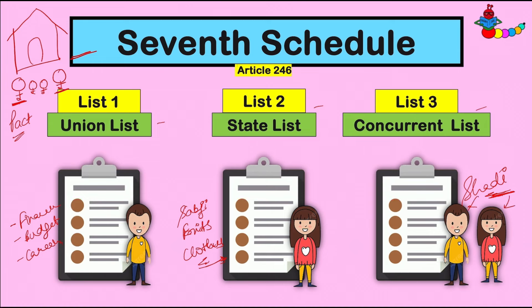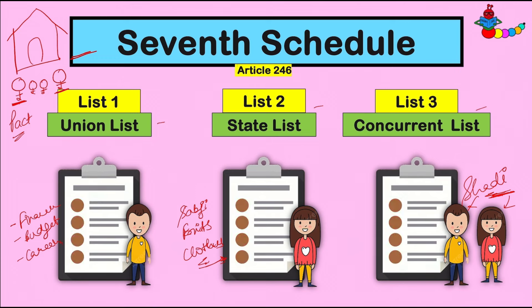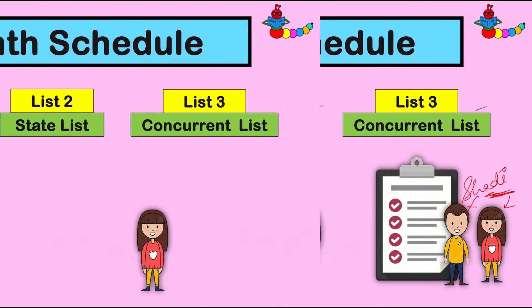In short, एक घर है जिसमें मम्मी-पापा हैं, दो बच्चे हैं, और मम्मी-पापा ने responsibilities को बांटा हुआ है। कुछ चीज़ों पे मम्मी decision लेती हैं, कुछ चीज़ों पे पापा decision लेते हैं, और कुछ चीज़ों पे ये दोनों मिलकर decision लेते हैं। ऐसे pact की वजह से इन सबका जीवन बहुत सुकून से निकल रहा था।